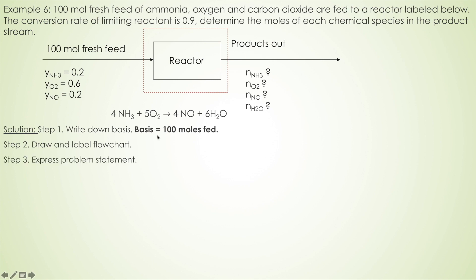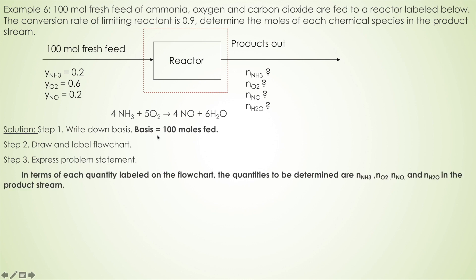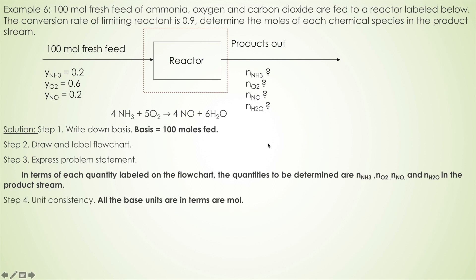Step three: express the problem statement. In this problem, in terms of each quantity labeled on the flowchart, the quantity to be determined is the mole number of each chemical species in the product stream. Step four: unit consistency. Because the basis is 100 moles fed, the unit is moles.